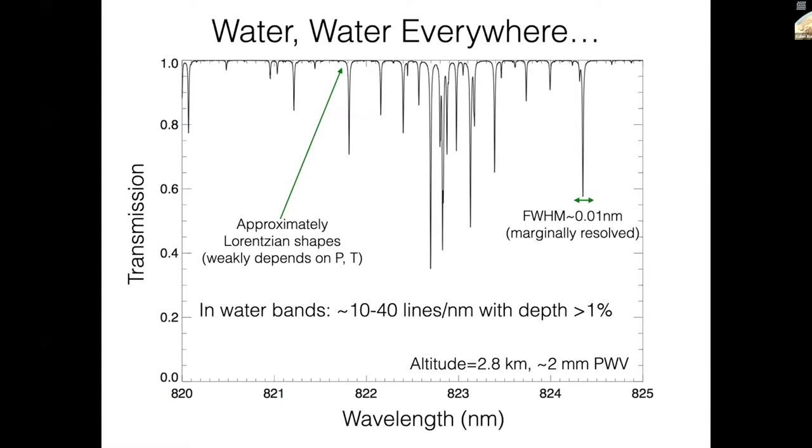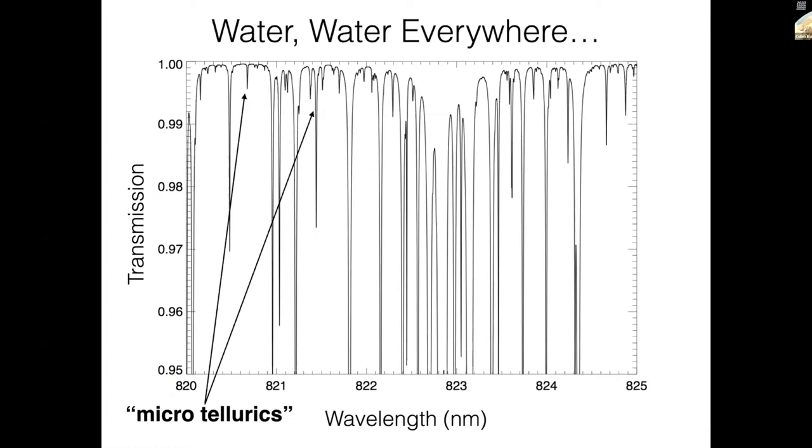The line shapes in detail are void profiles or potentially something even more complicated. But because water is primarily in the lower atmosphere where the pressure is relatively high, these are very well approximated by a Lorentzian shape. The water lines come in these bands, and within these bands, you tend to find about 10 to 40 lines per nanometer of spectrum having depths greater than about 1%. If you were to zoom in, you would see very many shallower water lines, the so-called micro-telluric. So if you're worried about absorption at less than 1% level, it really becomes more true that water is everywhere.